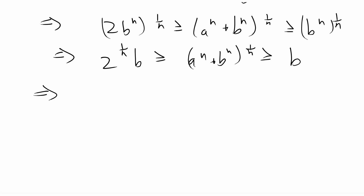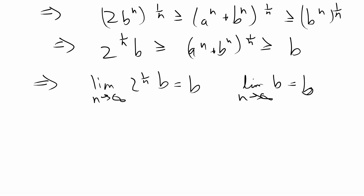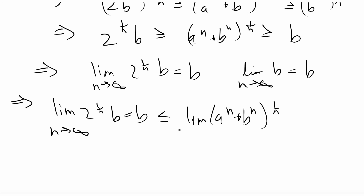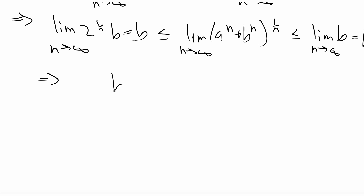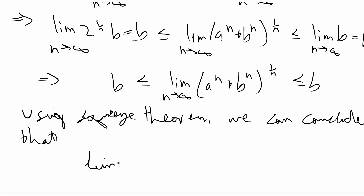Now we take the limit of all three values, since that's what we're trying to prove, and it should be clear we can use the squeeze theorem. The limit of 2^(1/n) · b as n → ∞ equals b, and the limit of b as n → ∞ equals b since b is a constant. So we have b ≤ lim(a^n + b^n)^(1/n) ≤ b. Thus by the squeeze theorem, the limit of (a^n + b^n)^(1/n) as n → ∞ equals b, and we're done with this proof.